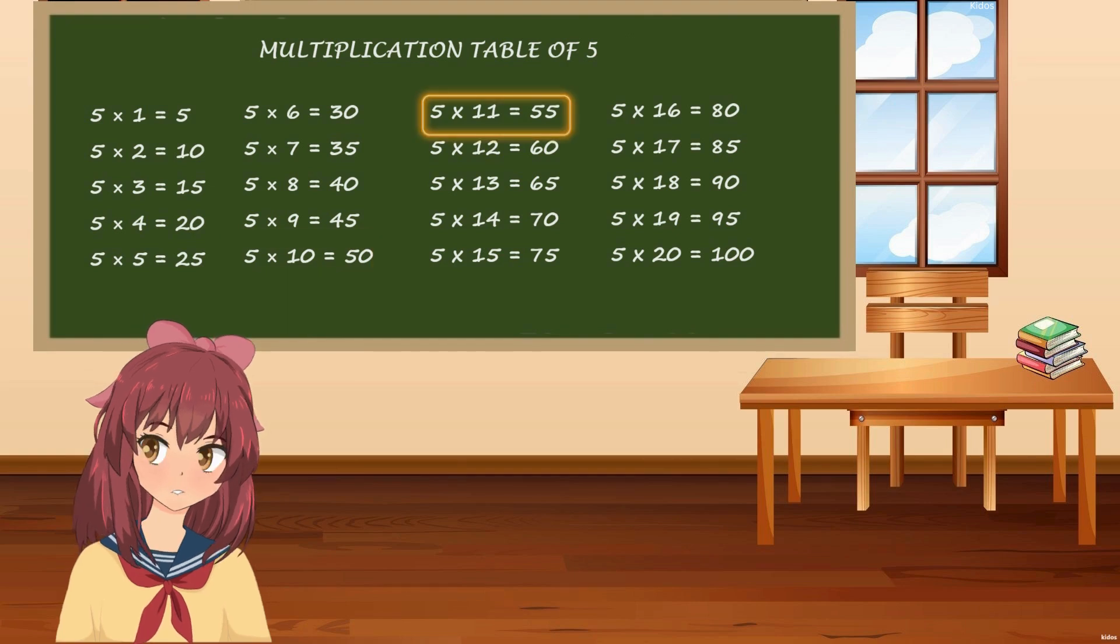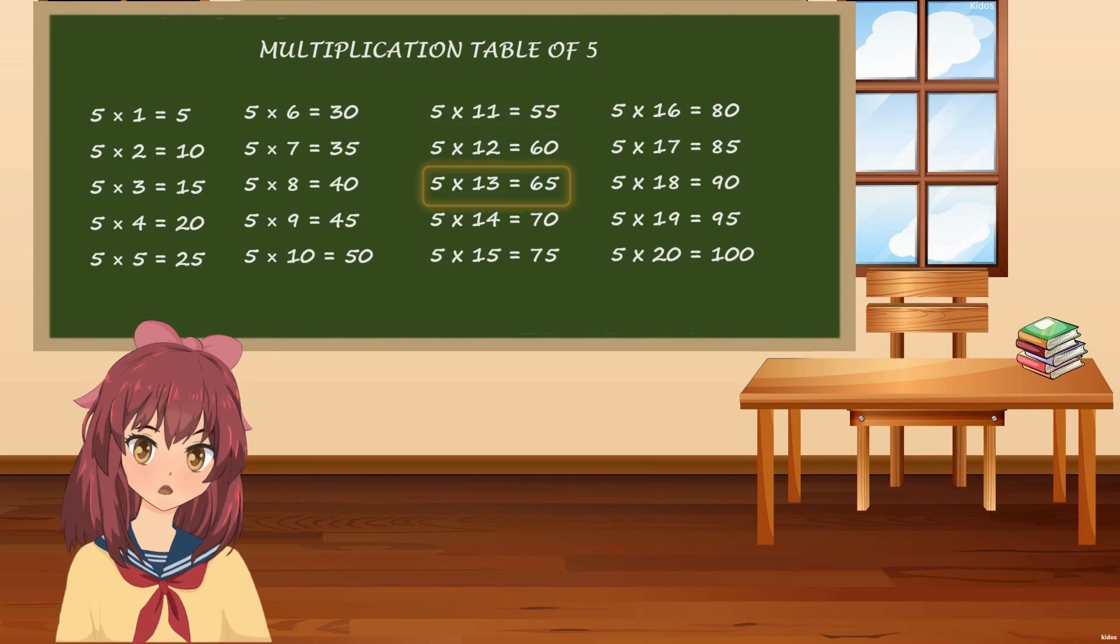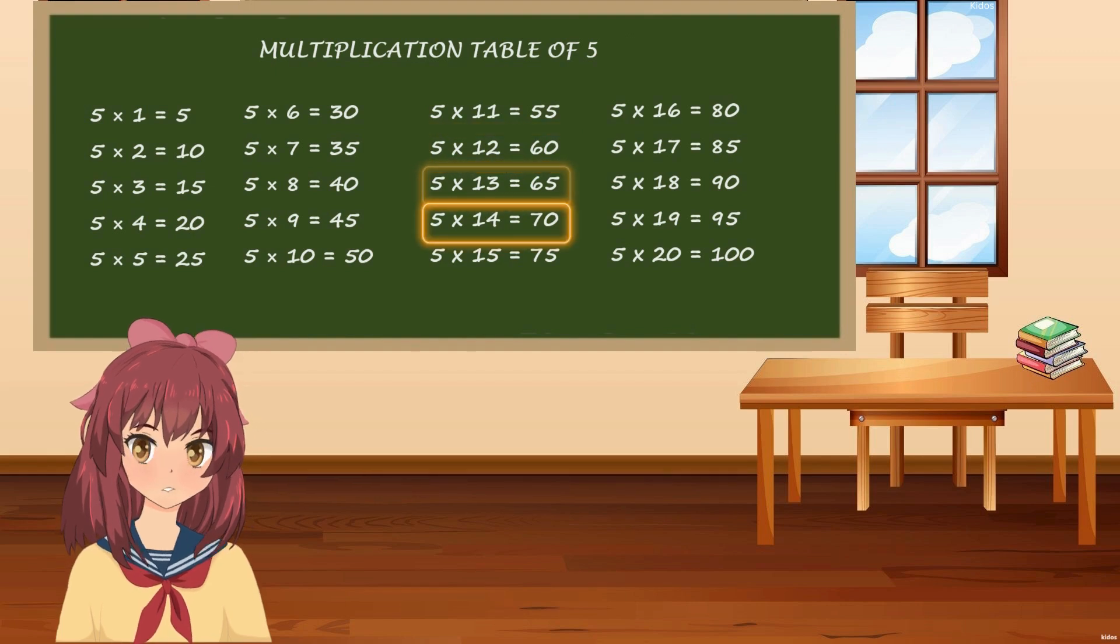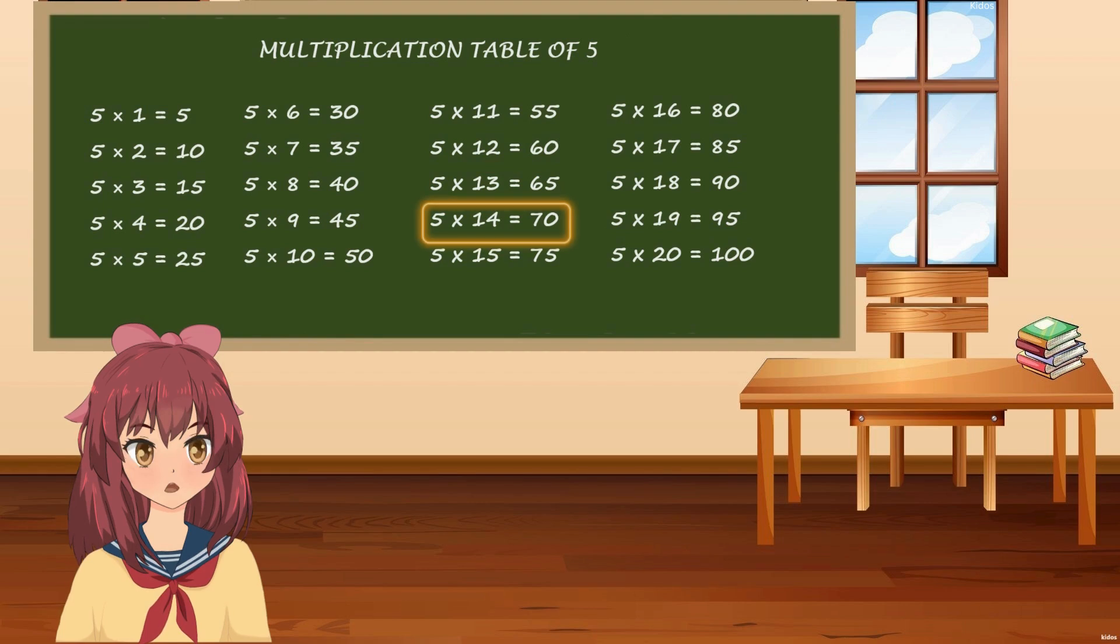5 times 11 is 55, 5 times 12 is 60, 5 times 13 is 65, 5 times 14 is 70, 5 times 15 is 75.